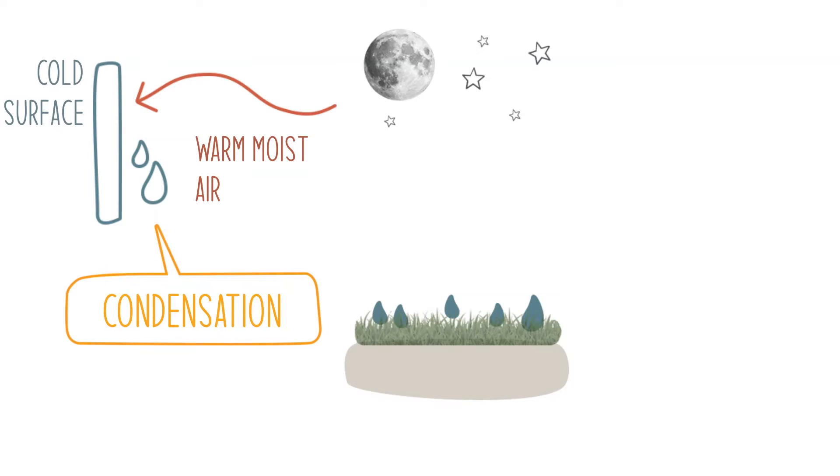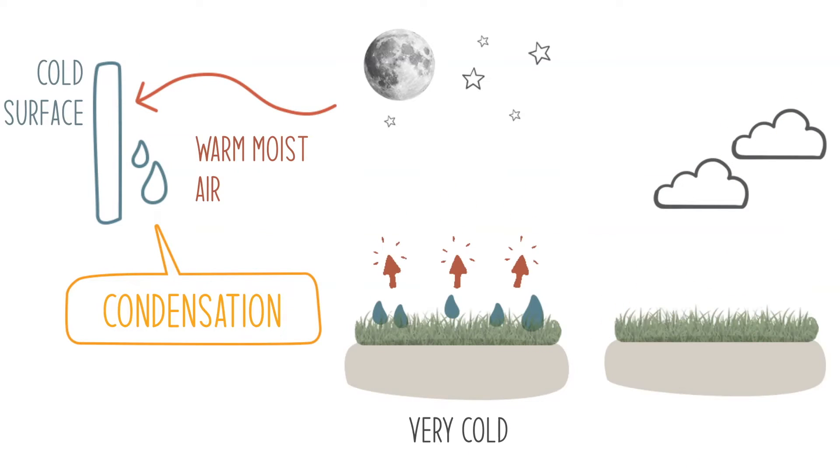Clear sky nights make ground surfaces emit more energy, meaning the ground gets colder than on cloudy nights when the ground loses less energy since the difference of temperature is smaller. Air can hold less moisture as it gets colder. The temperature at which it cannot hold any more moisture is the saturation point or dew point.